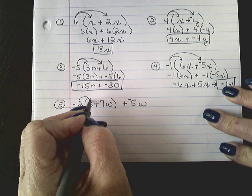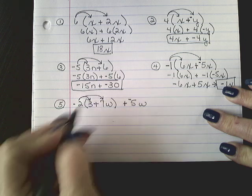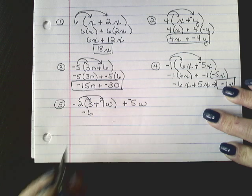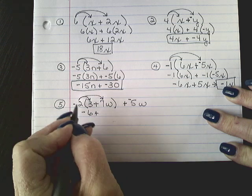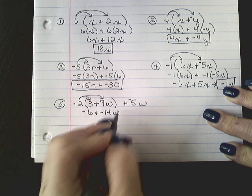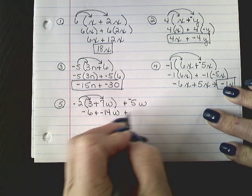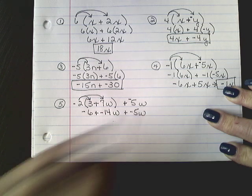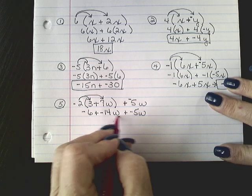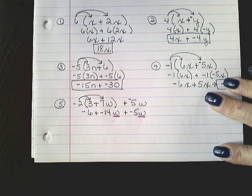I'm going to go ahead and distribute my negative 2. Negative 2 times 3 is negative 6. Negative 2 times 7 is negative 14w. And then bring down your plus negative 5w. Now look to see if you can combine any terms that are alike. And I see a w here and a w here, and they both are raised to the first power.